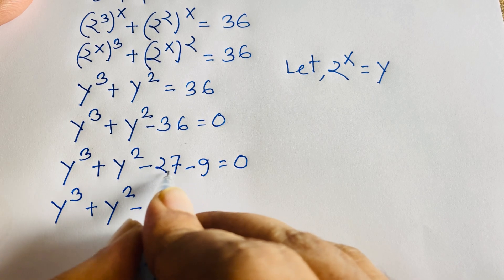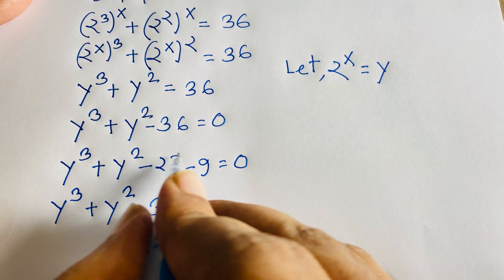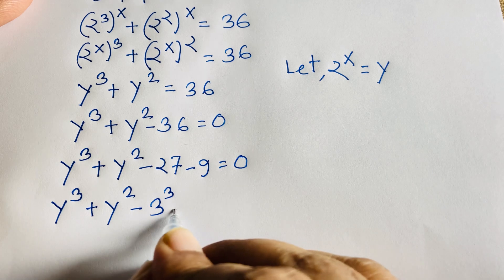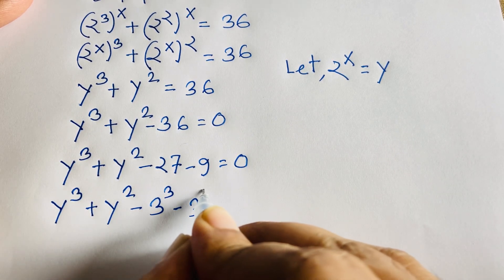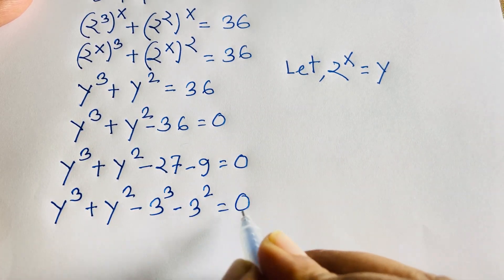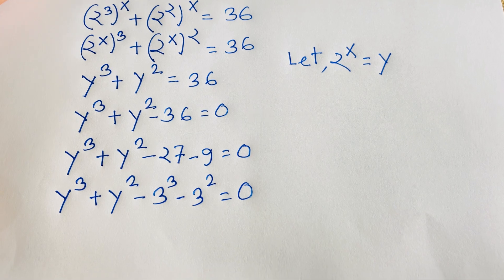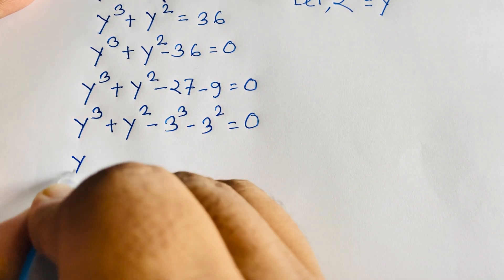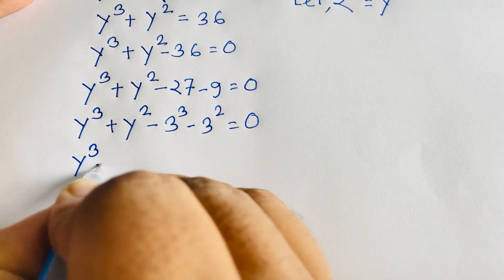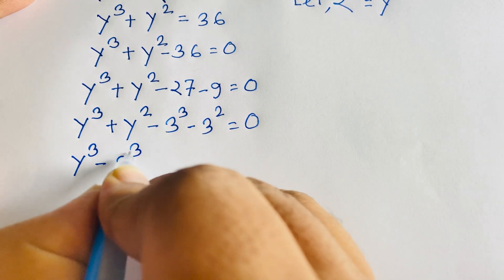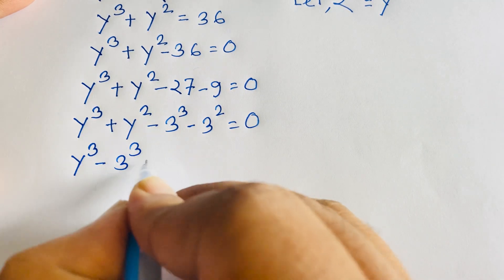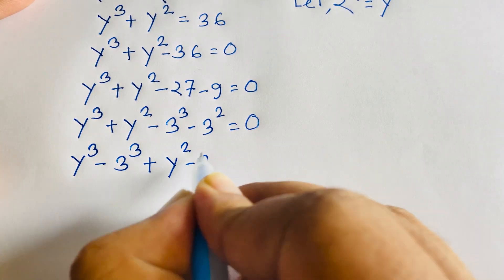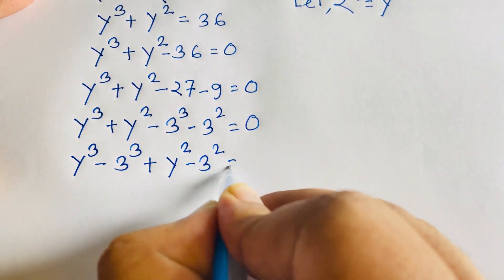Note that 3 to the power 3 is 27, and 27 plus 9 equals 36, and 9 is 3 to the power 2. So I rewrite the equation as y to the power 3 minus 3 to the power 3, plus y squared minus 3 to the power 2, is equal to 0.